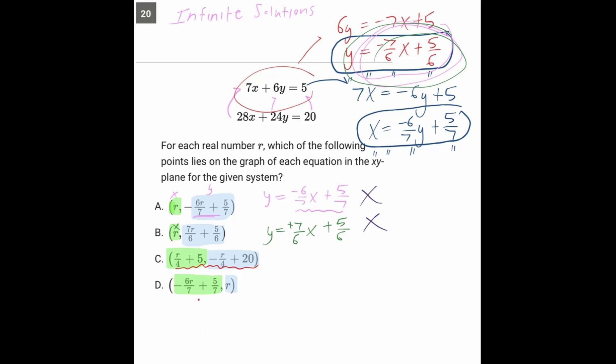Answer choice D is saying that we have some x value right here. And our y value is R. And it's saying that our x value is what we get when we multiply our y value, which is R, by negative 6 over 7. And then we're adding 5 over 7 to that. So does that match our x statement that we had? Negative 6 over 7y plus 5 over 7? Yes. It's a perfect fit. And so the answer to 20 is D.